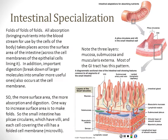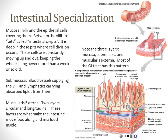The mucosa is where all the action is, but you still have a submucosa just like in other parts of the GI tissue, and two layers of smooth muscle — circular layer and longitudinal layer — doing the motion: peristalsis and segmentation that we talked about on day one.